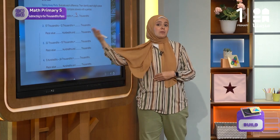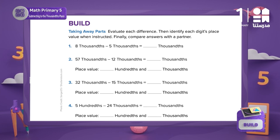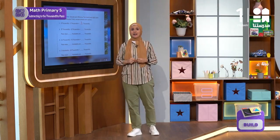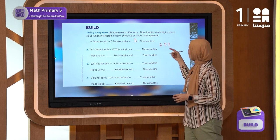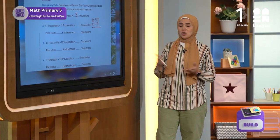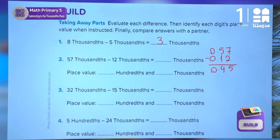Now I will give you enough time to solve problem 2 and write the place value of each number. Let's solve the problem together so each of you can review your answer. I will write the numbers above each other. So we have 5,700 hundredths minus 1,200 hundredths. We subtract 2 from 7 to get 5, and 1 from 5 to get 4. The result is 45 hundredths.